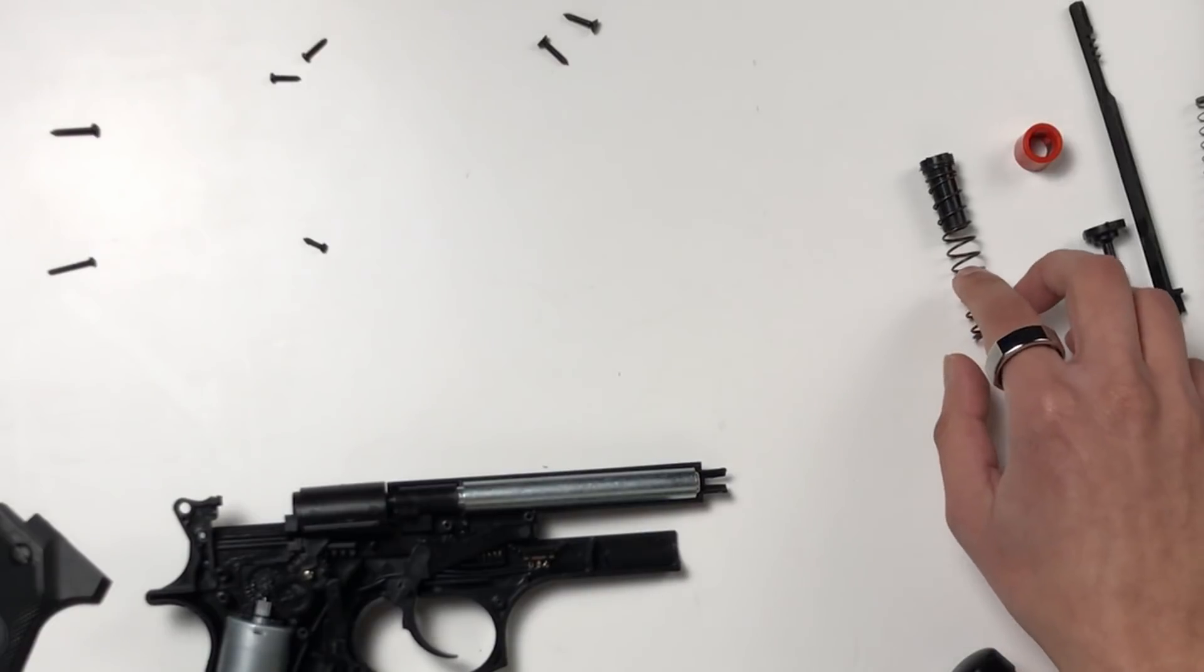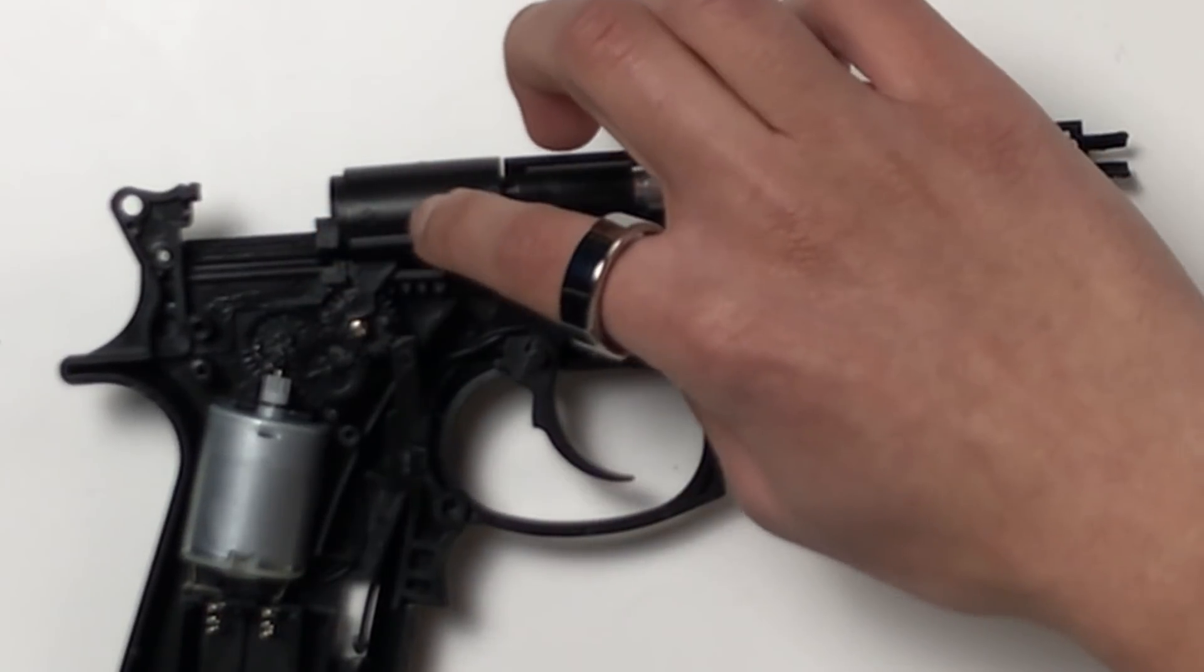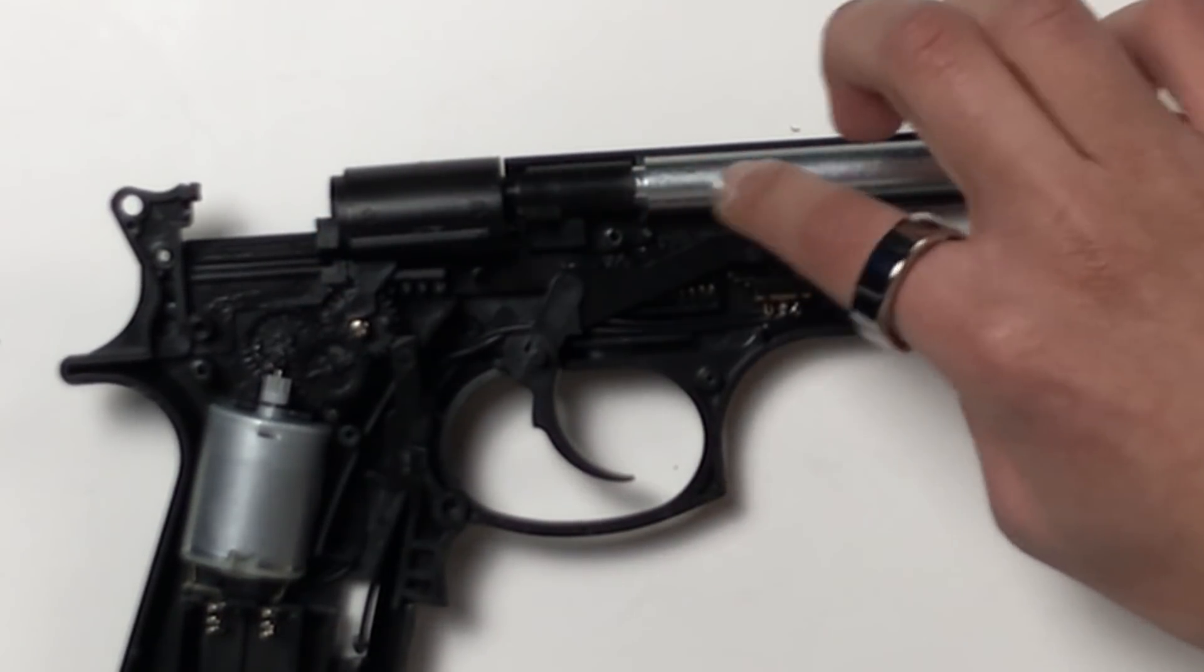Let's walk through how it works. So it's actually pretty similar to the LEGO model I showed earlier. We have a spring, a piston, a cylinder, a nozzle, and a barrel.